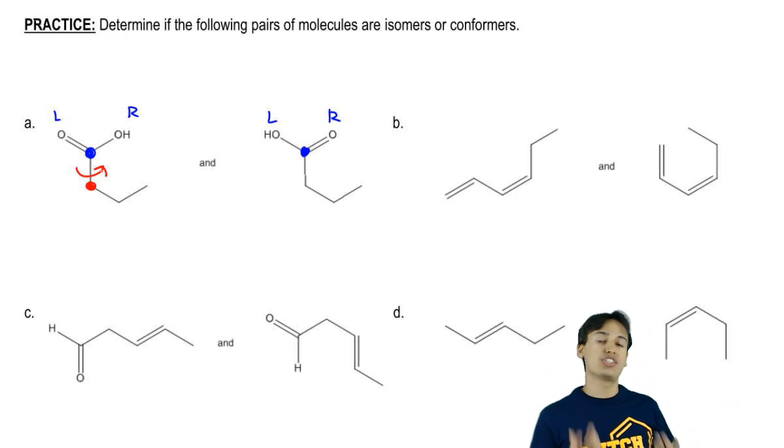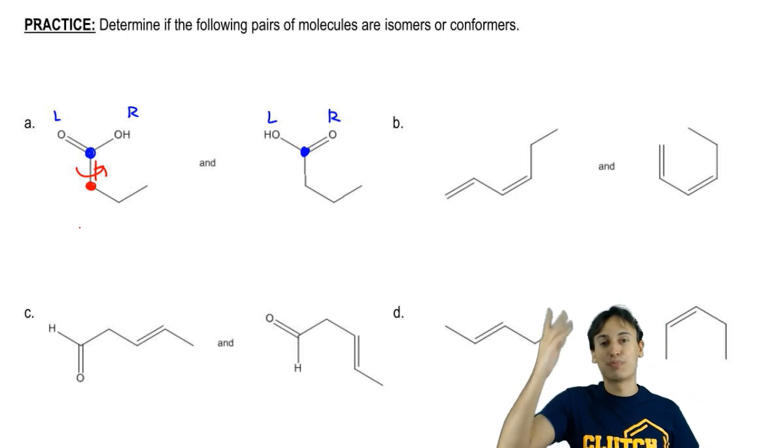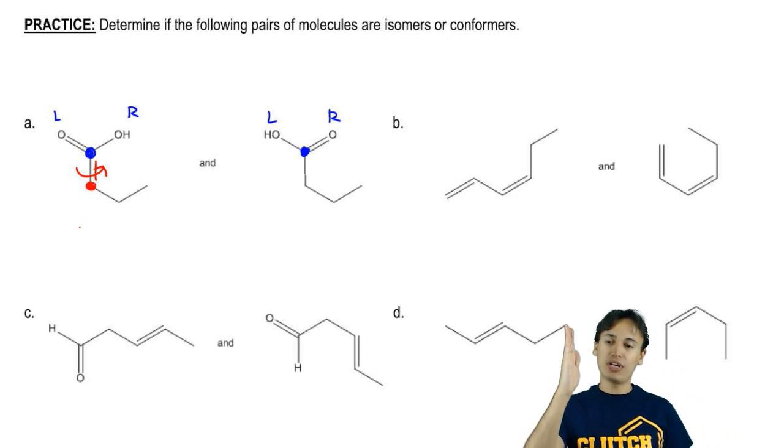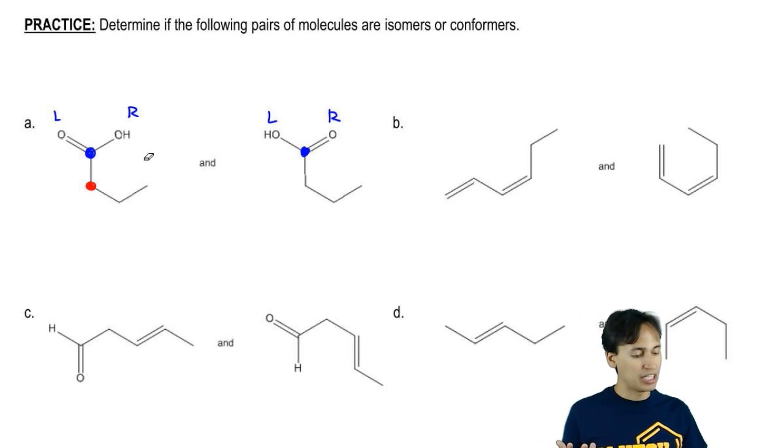Now how would I know if it was an isomer? If there had been a double bond here. Obviously that would break the octet of the blue, so that wouldn't happen. But if you had a double bond there, you couldn't rotate because double bonds and triple bonds can't rotate. That's the way we're going to think about it.